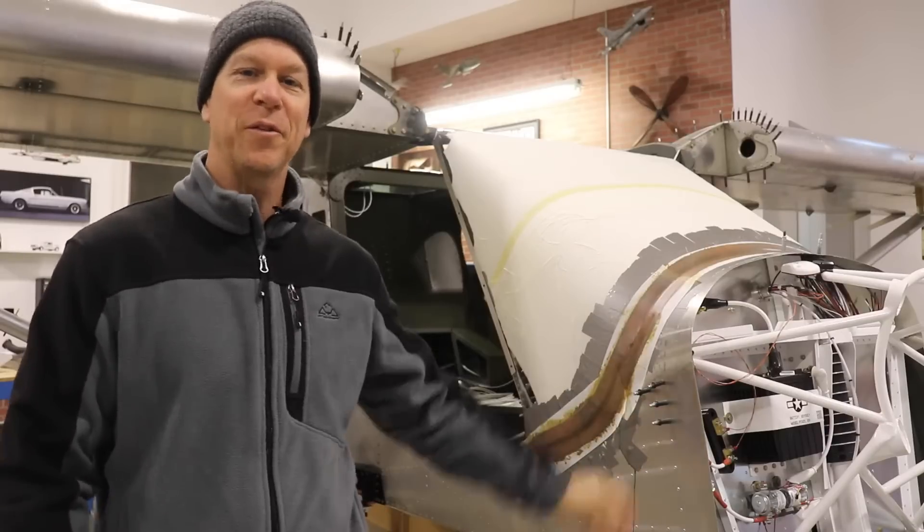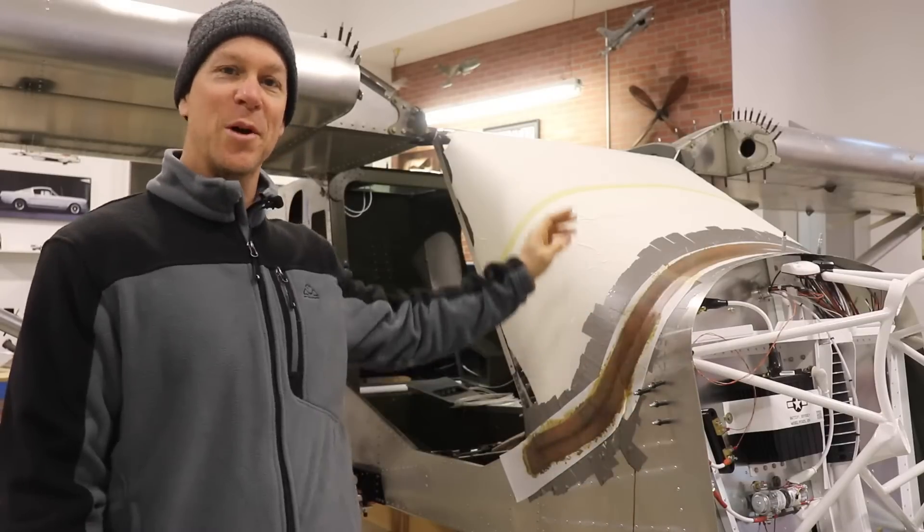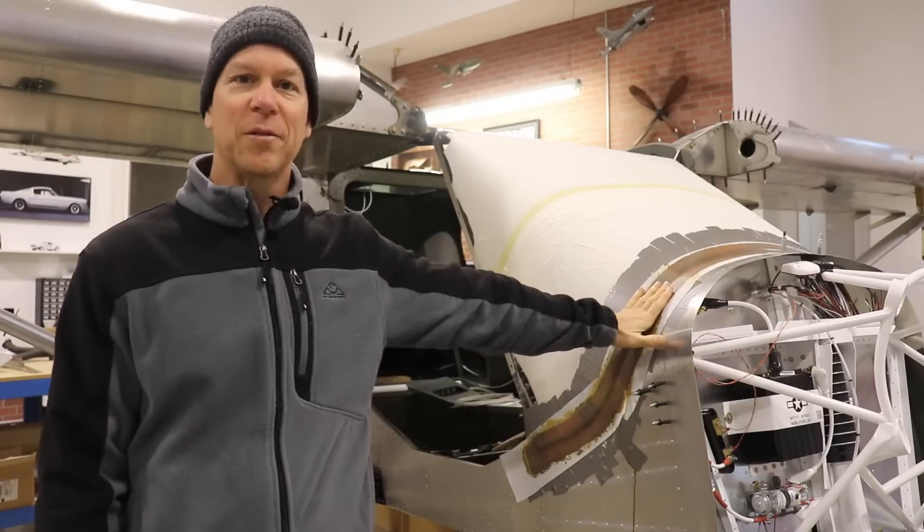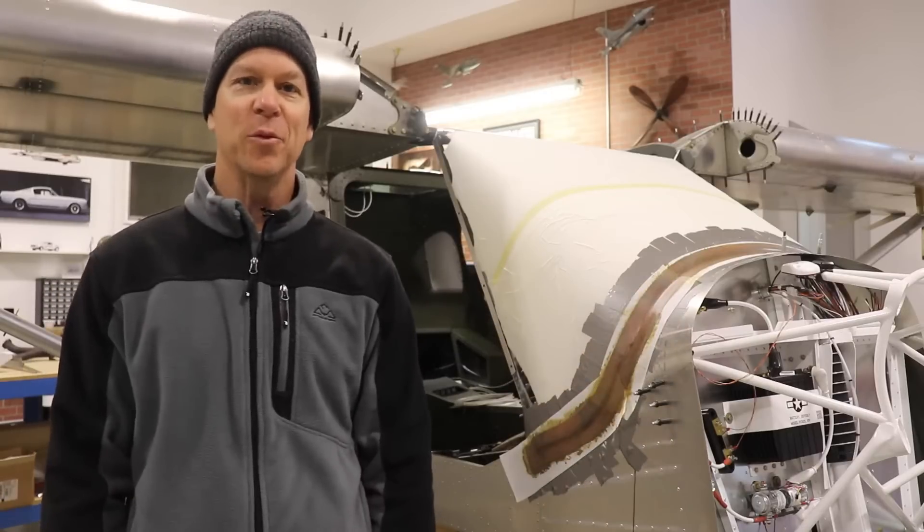Well guys, welcome back to the Zenith 750 Super Duty build. As promised, I did put one more layer of glass on this fairing around the bottom of the windshield.